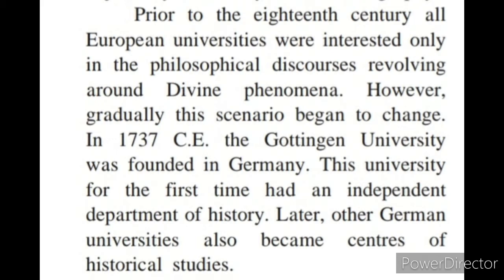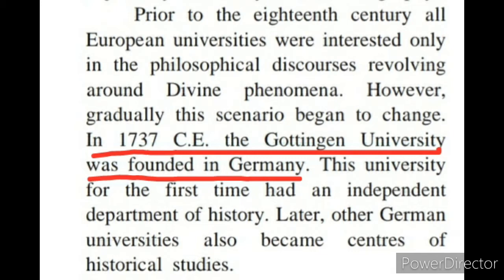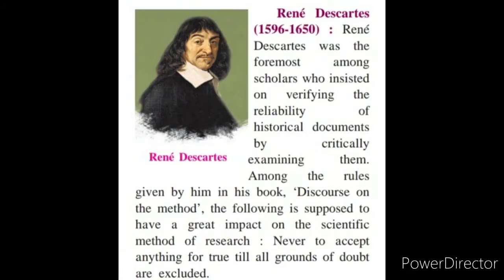Before the 18th century, all universities in Europe were more focused on divine power and the existence of God rather than history. But in the year 1737, a German university named Göttingen University was founded, and this was the first university to have a separate department for history. This was a revolutionary moment — for the first time a university created a separate department for the study of history. Later, other German universities also became centers of historical studies, and the study of history became quite successful and important in Germany and Europe.